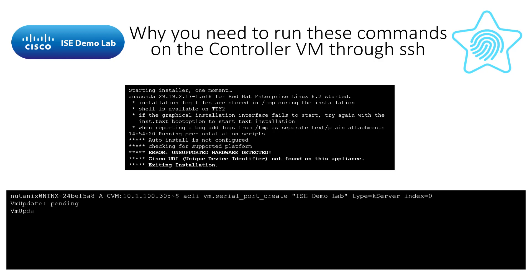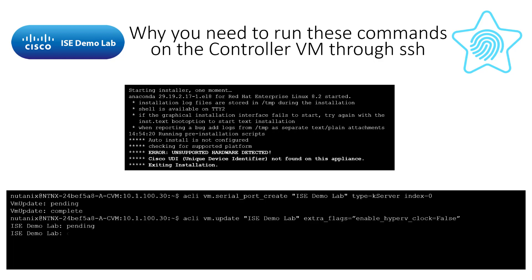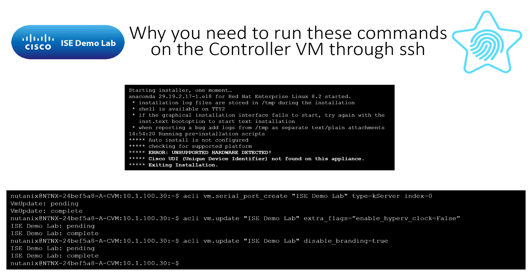Since we're in the CVM anyway, let's add a serial port since this is the only way to monitor the ZTP installation process. Then we can update the VM to disable the Hyper-V clock, and finally update the VM to disable hypervisor branding. The last two updates will let the ICE installation detect the hypervisor as KVM and will allow the installation to proceed.